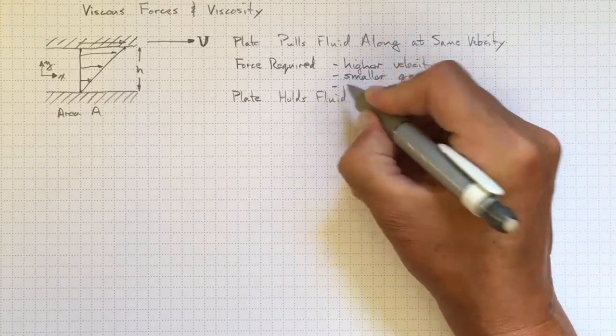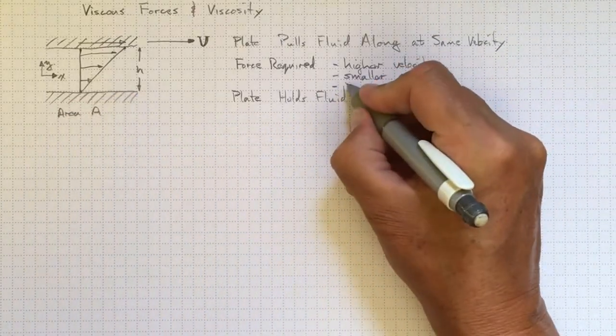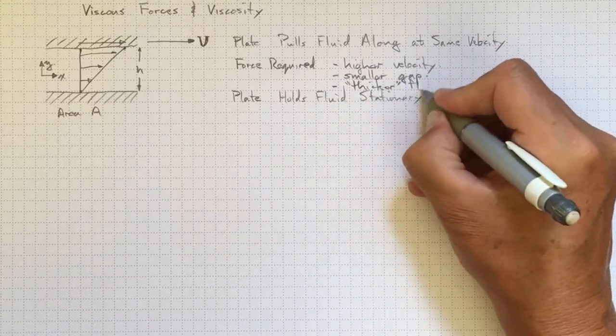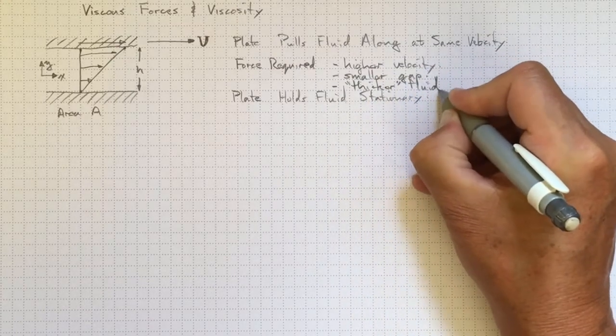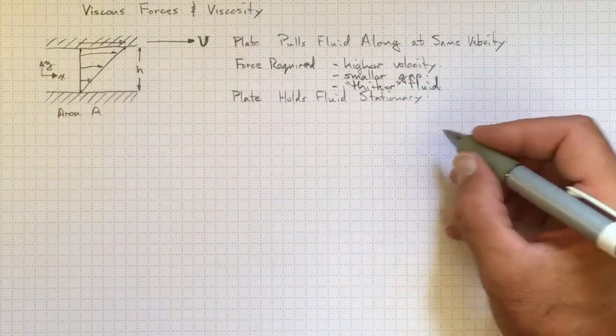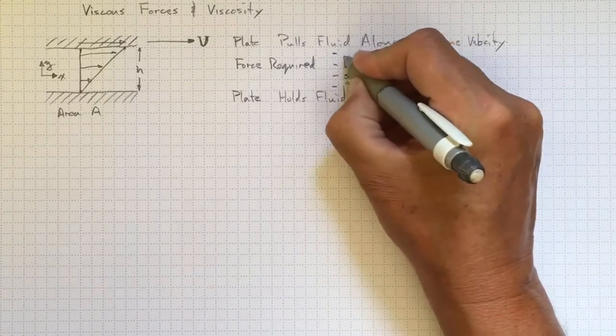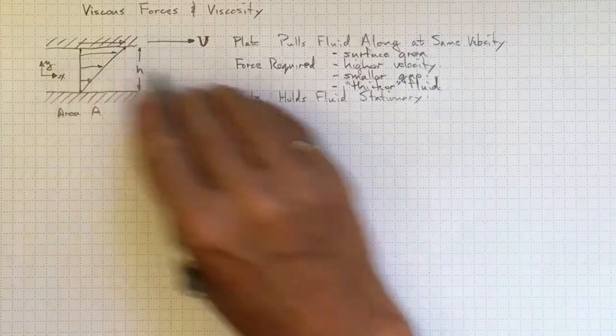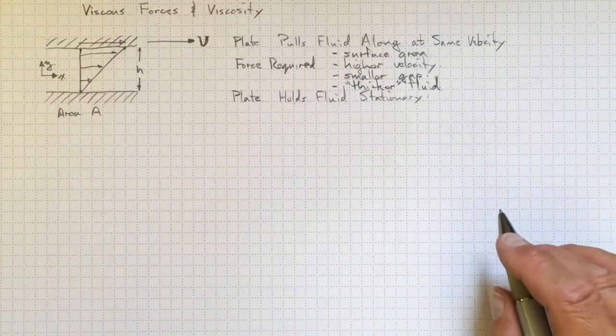It also goes up if we have a fluid that is thicker. Different fluids will be easier or harder to deform this way. And it also goes up, as you'd expect, with the surface area. So the bigger the area of the plates, the harder you're going to have to pull to slide them along.